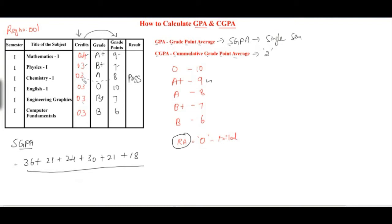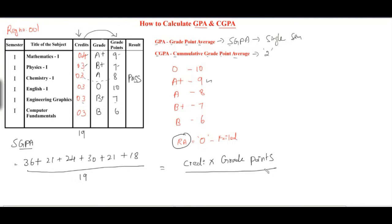Continuing the calculation: 3 × 8 = 24, 3 × 10 = 30, 3 × 7 = 21, and 3 × 6 = 18. This sum is then divided by the credits received — that is, the credits earned by the student. The formula is: sum of (credit × grade point) for each subject, divided by the total credits earned.